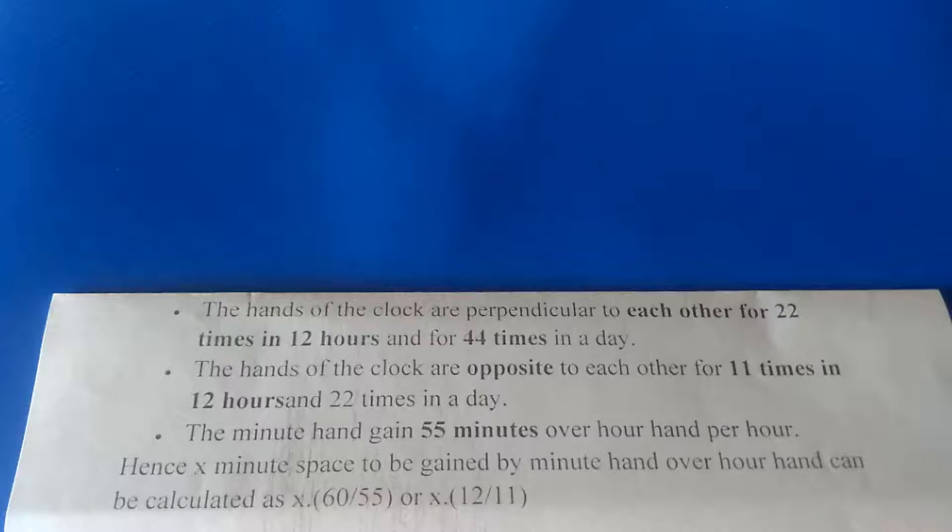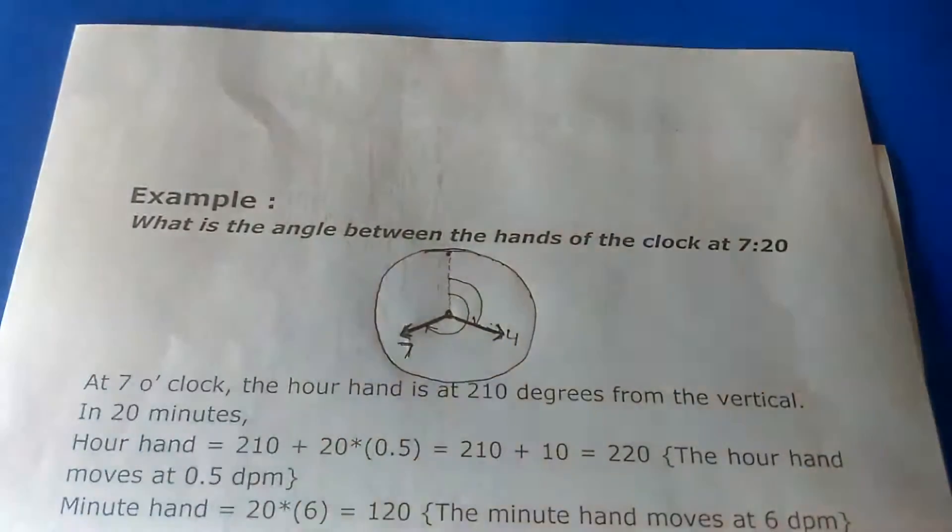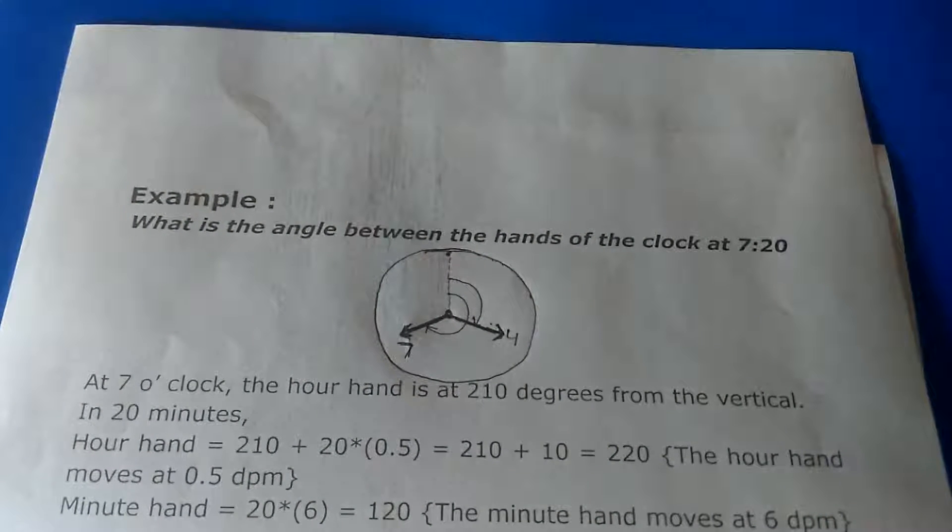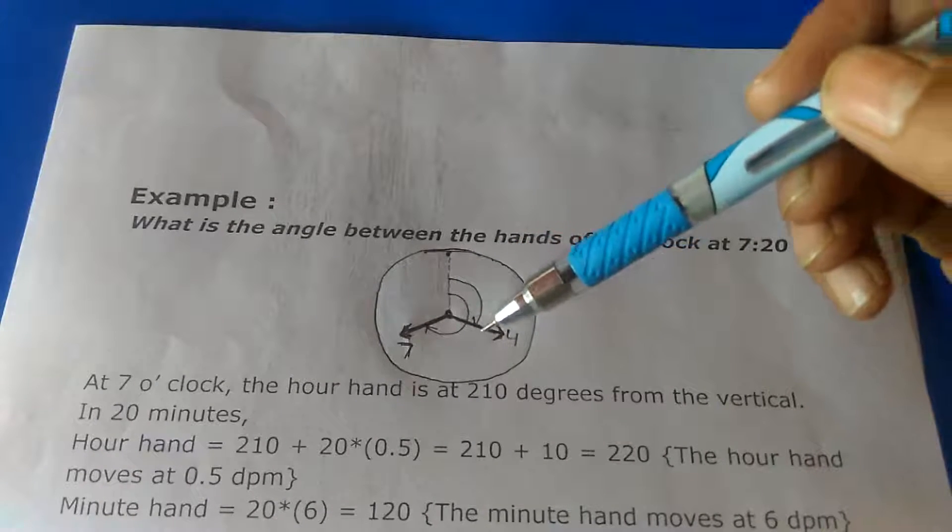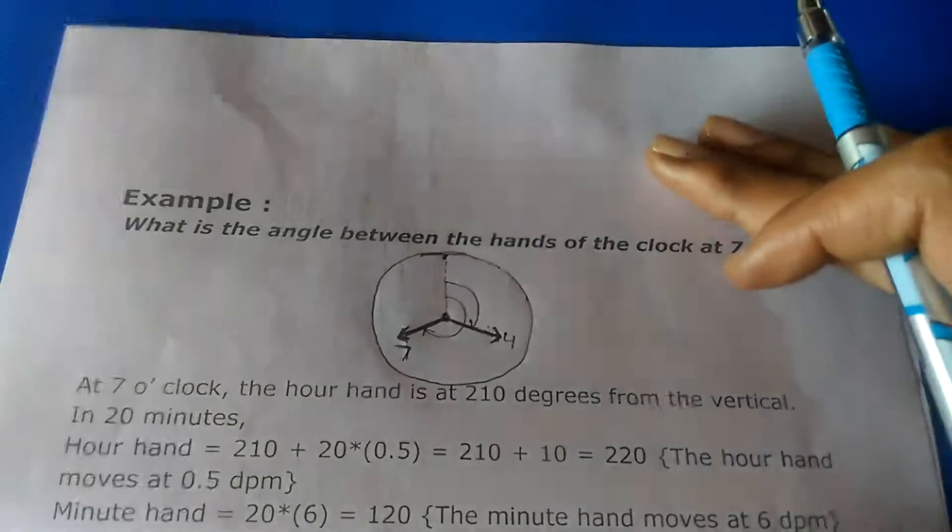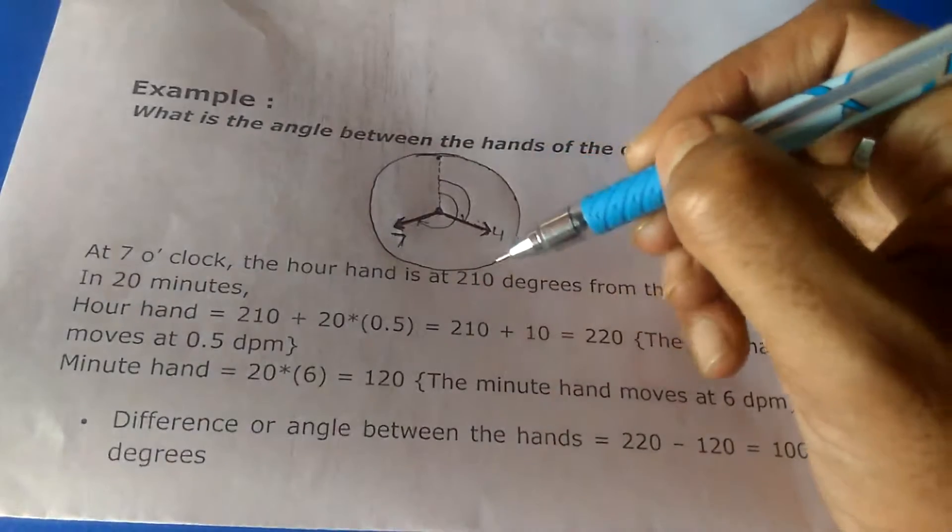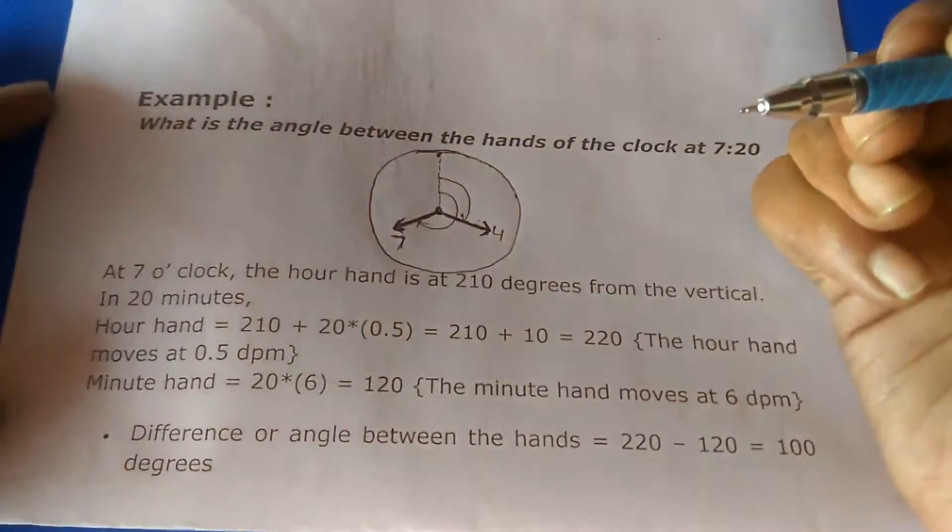Let's take some examples to illustrate this concept. First one: what is the angle between the hands of a clock at 7:20? Suppose we want to find the angle between the hour hand and minute hand.